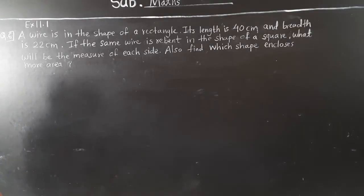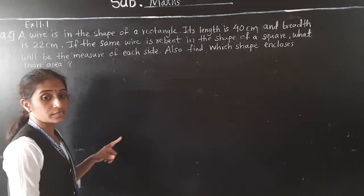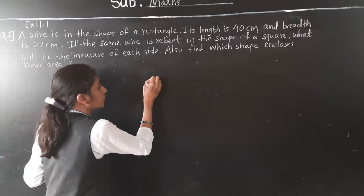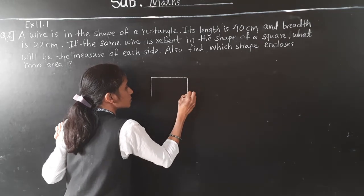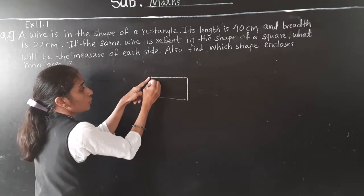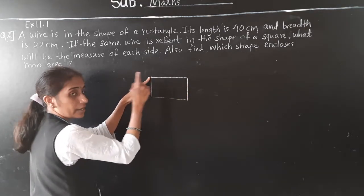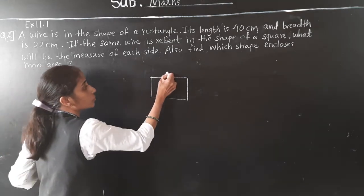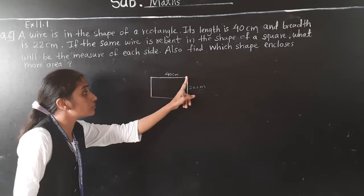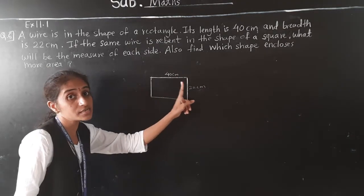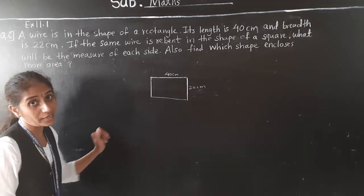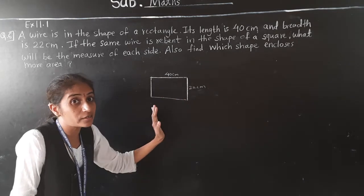Question number 6: A wire is in the shape of a rectangle. Its length is 40 centimeter and the breadth is 22 centimeter. Since the wire is in the shape of a rectangle, we can find the perimeter of the rectangle.